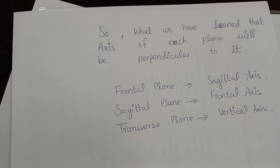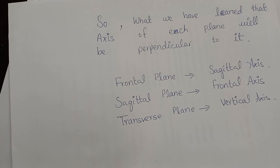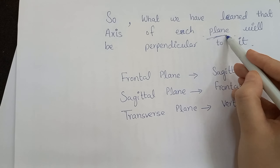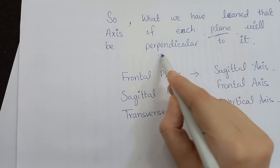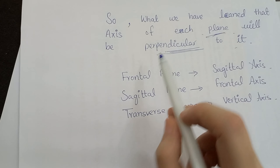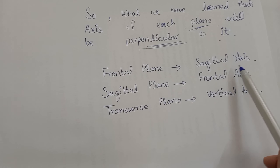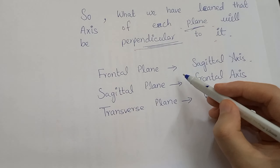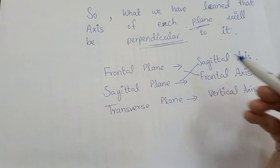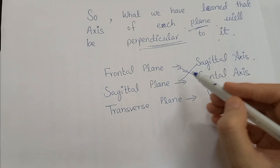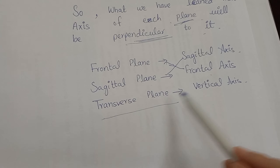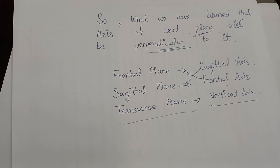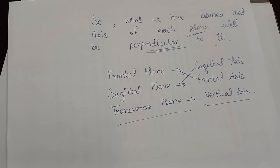Let's have a quick review of axes. Each plane's axis must be perpendicular or 90 degrees to it. In the frontal plane, there will be a sagittal axis. In the sagittal plane, there will be a frontal axis. And in the transverse plane, there will be a vertical axis. That's it for today. Thank you for watching this video, and remember me in your prayers.